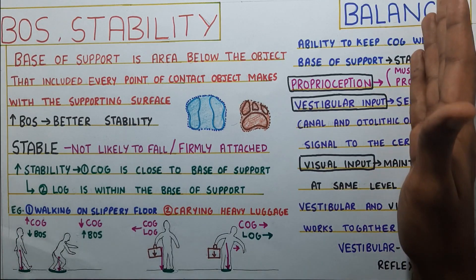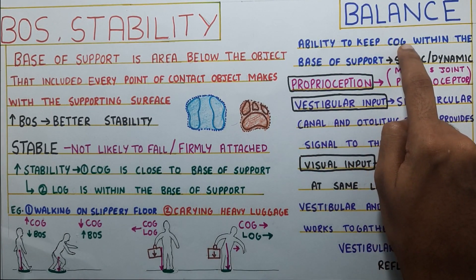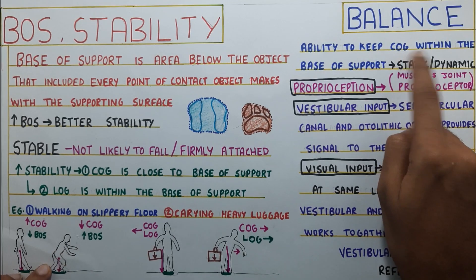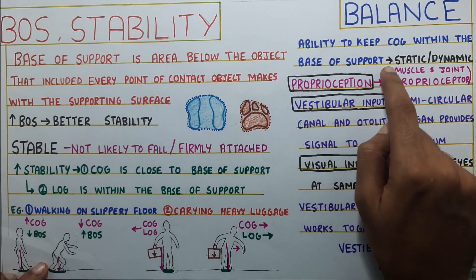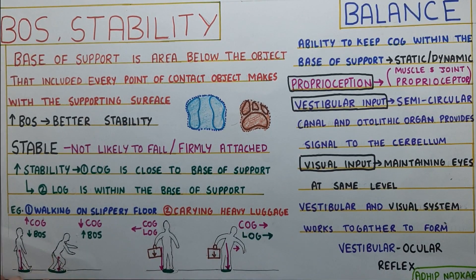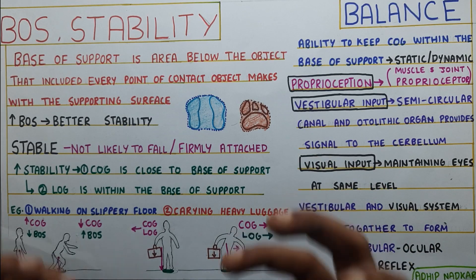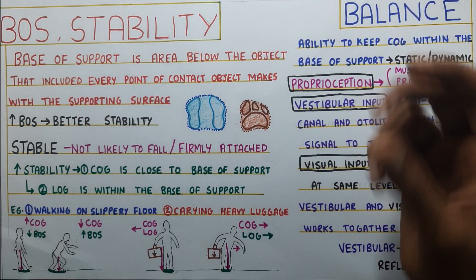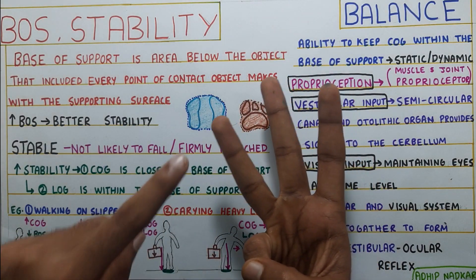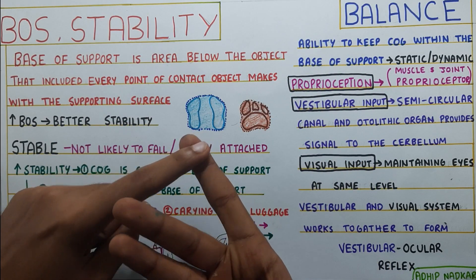Now let's move on to balance. Balance is basically your ability to keep the center of gravity within the base of support in both static and dynamic situations. This ability is achieved through three ways: proprioception, vestibular input, and visual input.